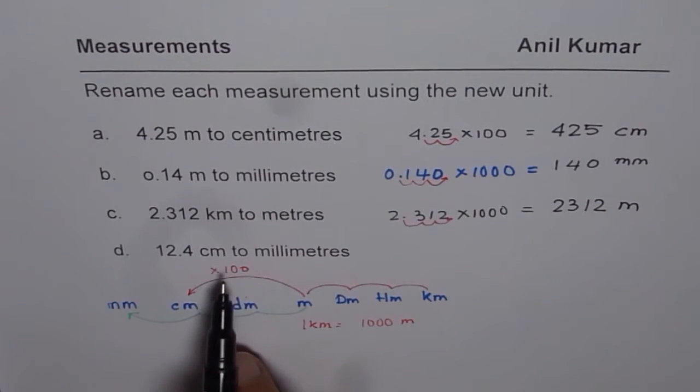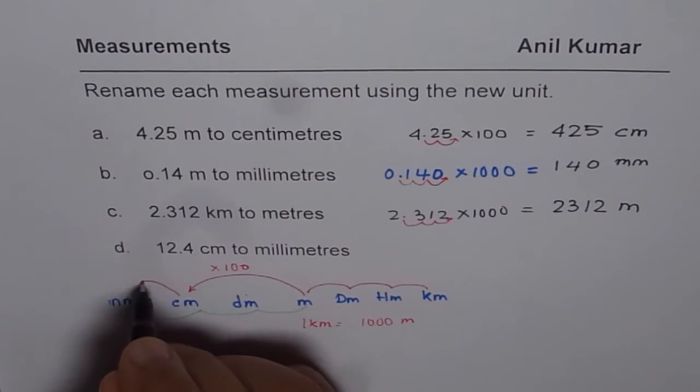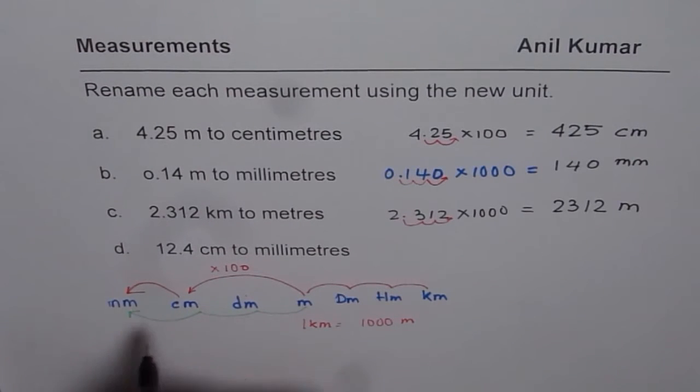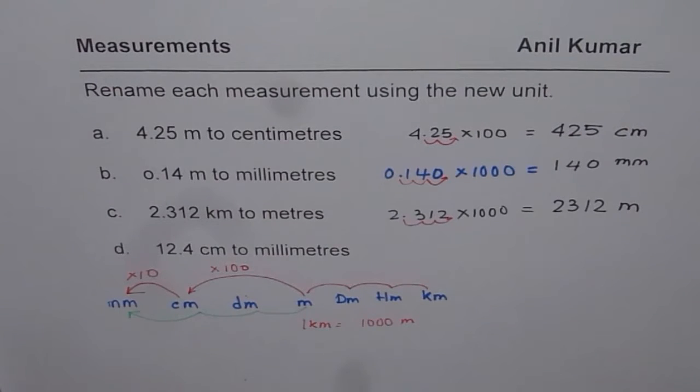Last one here is centimeters to millimeters. Well, to go from centimeters to millimeters, we are going one place to the left. That means we will do times 10. So we will do times 10.